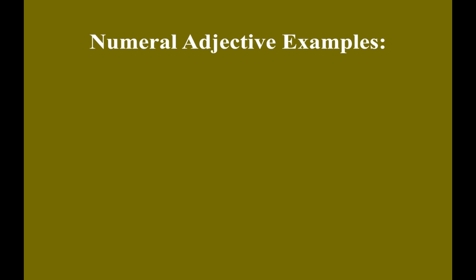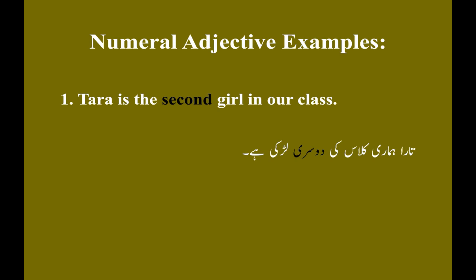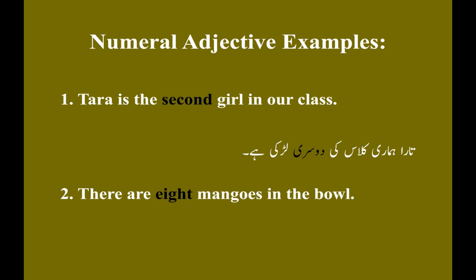Numeral adjective examples. Example number one: Tara is the second girl in our class. Tara humari class ki dousri larki hai. Example number two: There are eight mangoes in the bowl. Yali mein aatham hain.